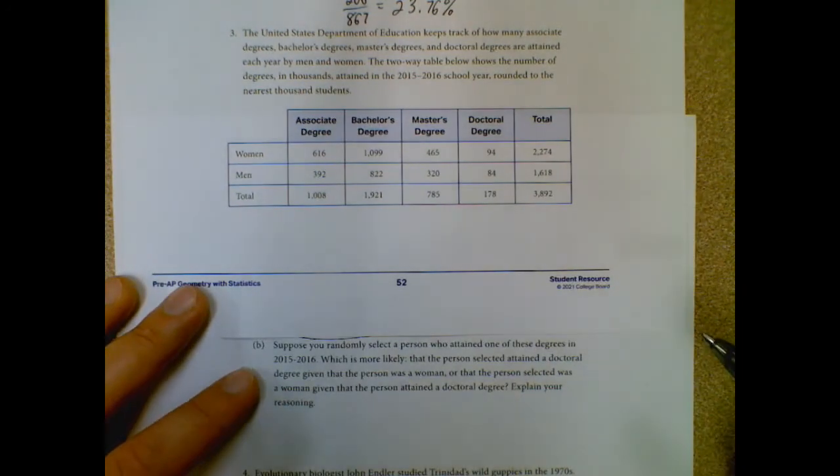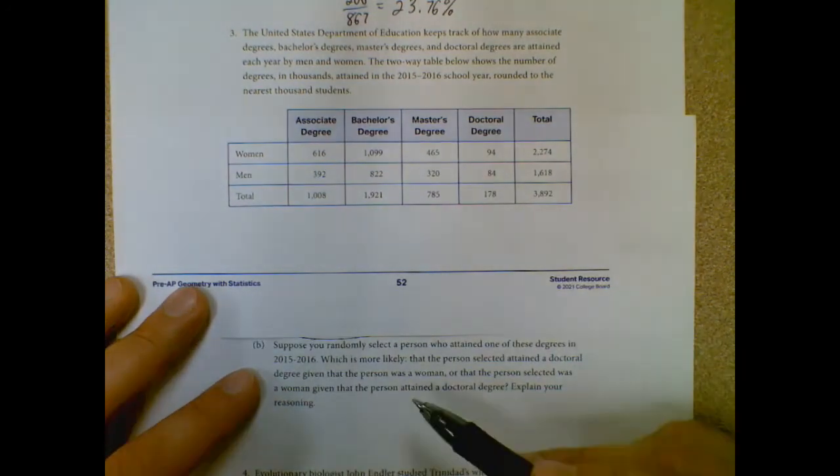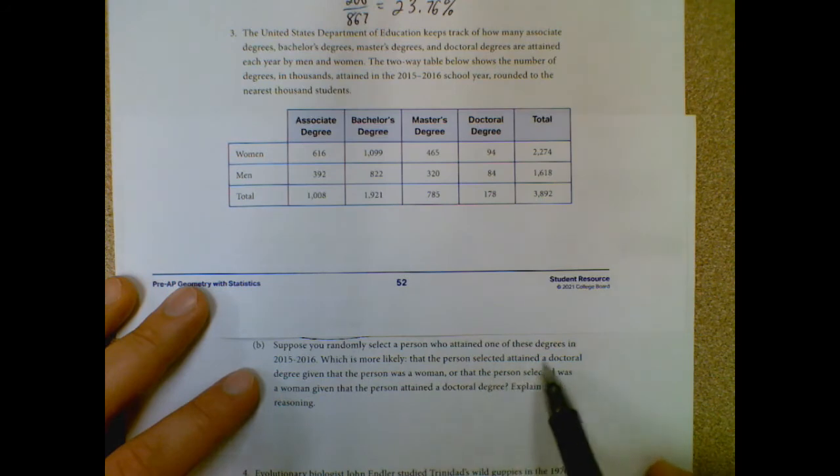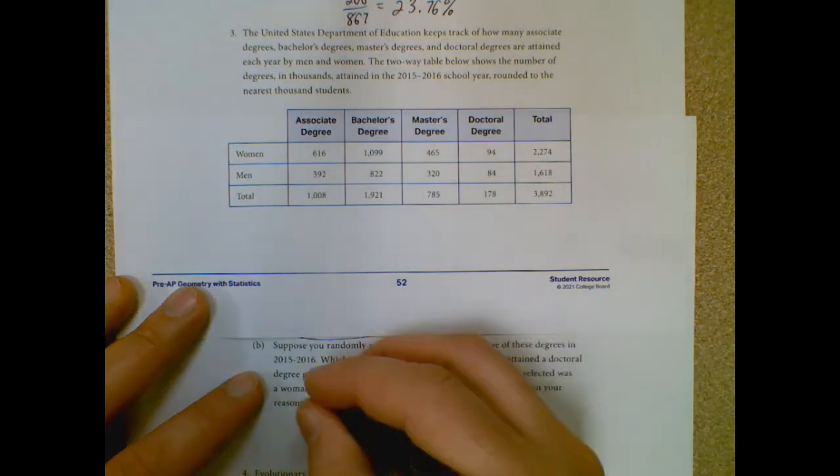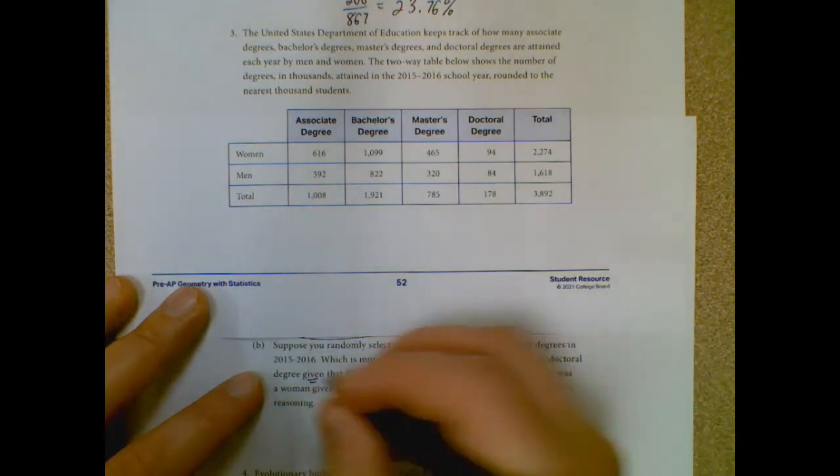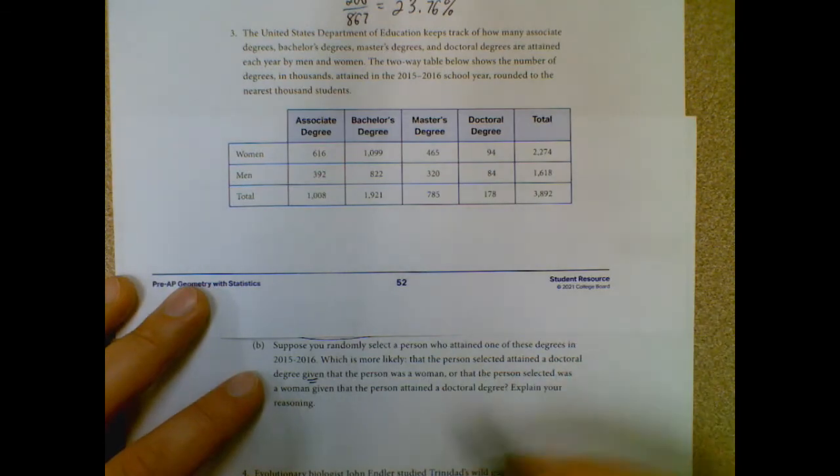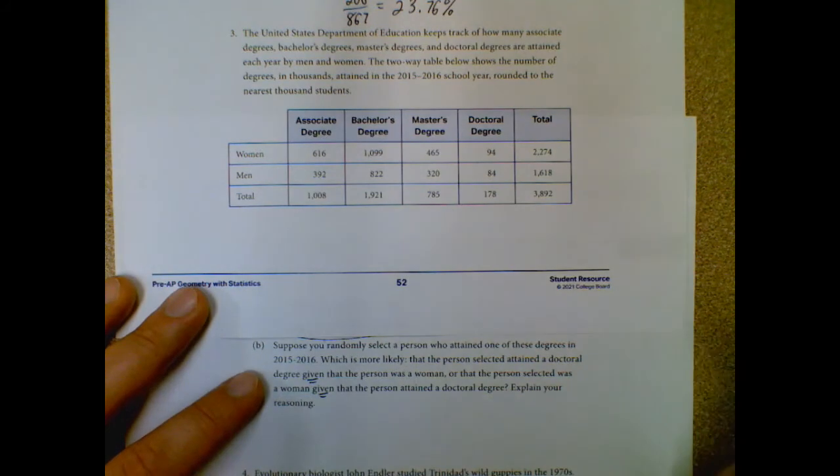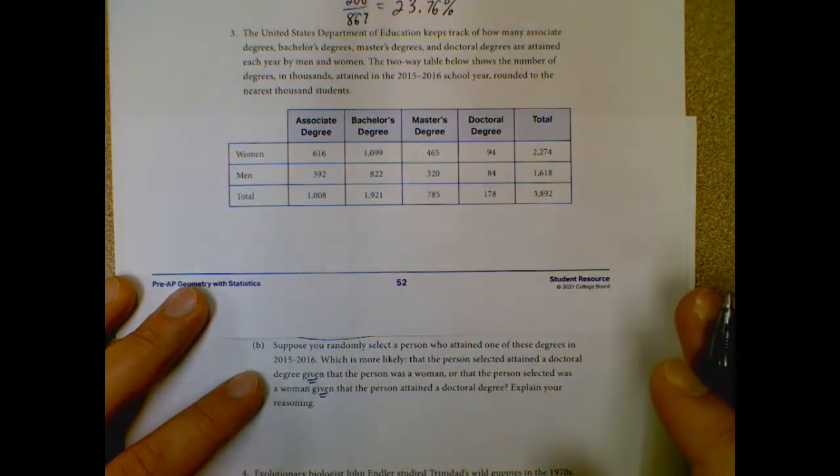And so part B: suppose you randomly select a person who attained one of the degrees in 2015-2016. Which is more likely now - the person attained a doctoral degree given that the person was a woman, or that the person selected was a woman given that they attained a doctoral degree? Explain your reasoning. These seem like they should be pretty similar, but honestly, they're not. That given is very different.